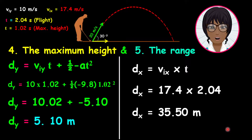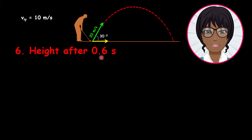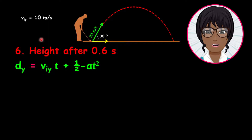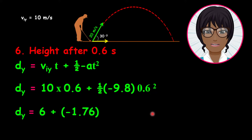Now for the final question. We want to find the height of the ball after 0.6 seconds. To determine this height, we use the formula: dy equals the initial velocity multiplied by time plus half negative acceleration multiplied by time squared. In this case the time is given. Therefore, dy equals 10 multiplied by 0.6 plus half negative 9.8 multiplied by 0.6 squared. This gives dy equals 6 plus negative 1.76, thus dy equals 4.24 meters.